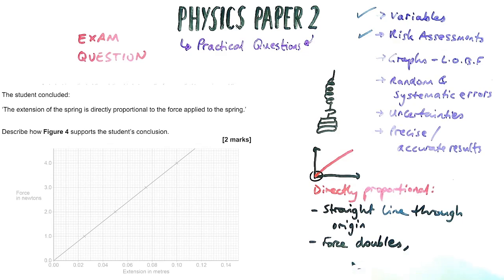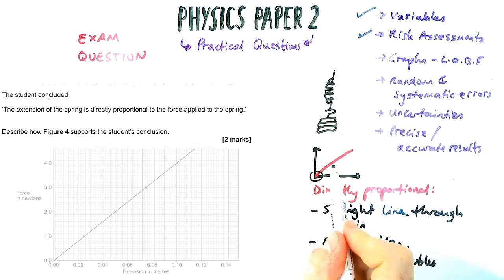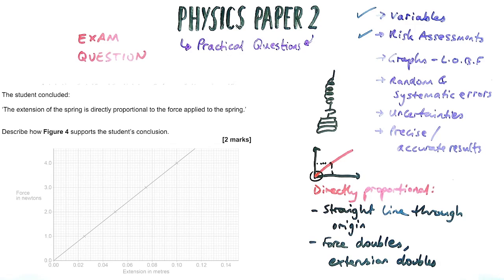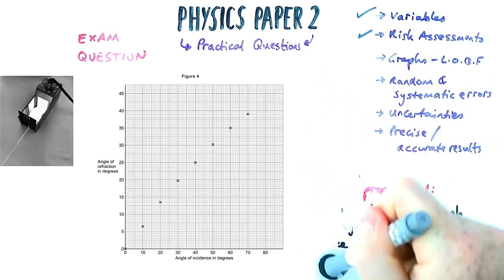And part two, or the second mark, is we say as one thing doubles, the other thing doubles. In this case, it's force doubling means extension doubles. That would be the answer if there wasn't a graph as well, so for two marks you've got to say two things.